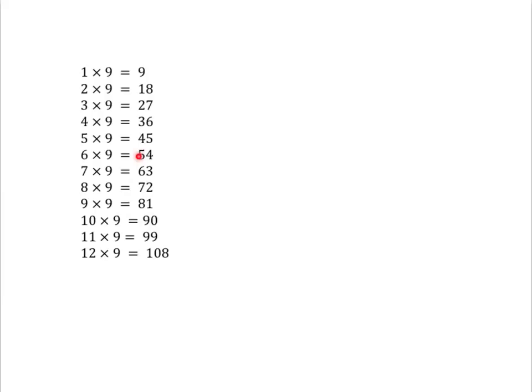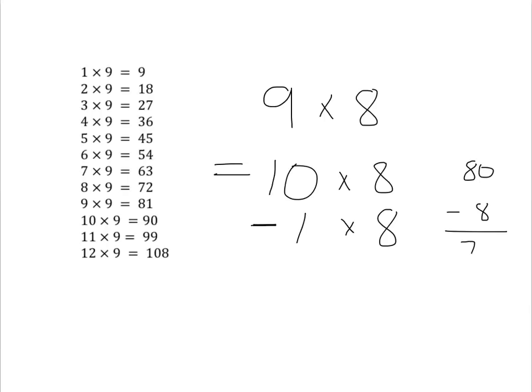If we wanted to do 9 times 8, what we're wanting is we've got 9 lots of 8. Well 9 lots of 8, we can say we've got 10 lots of 8, but that's one too many so we must subtract off one lot of 8. 10 lots of 8 is 80, one lot of 8 is 8, and subtracting it off will give us 72. This means it's very easy for us to do any calculation when we are multiplying by 9. So let's do another one.